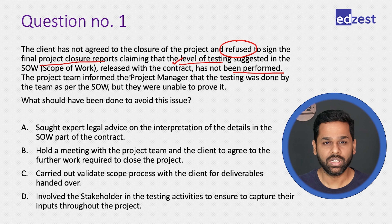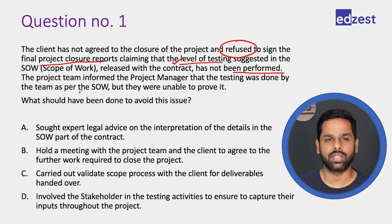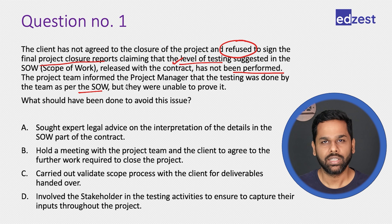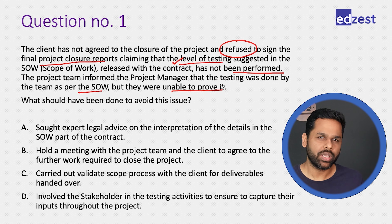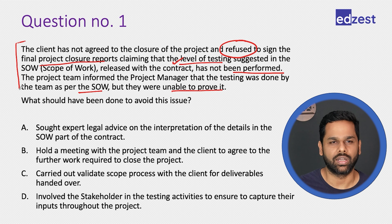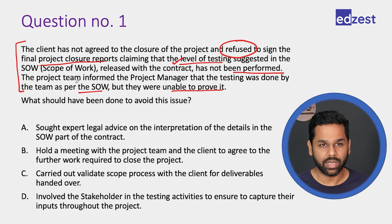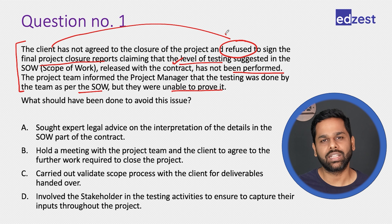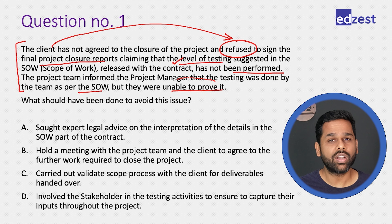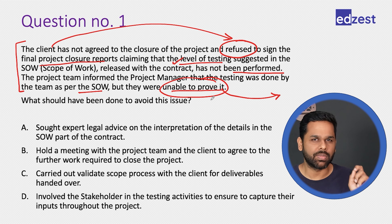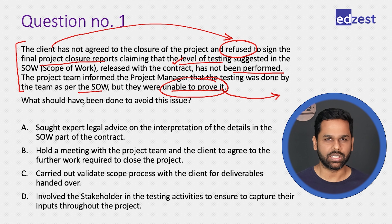The project team informed the project manager that the testing was done as per the SOW, but they were unable to prove it. This question talks about a situation where the client is not signing the project closure report. The team could do it but were not able to prove it — something is missing on the proving part. What should have been done to avoid this issue?